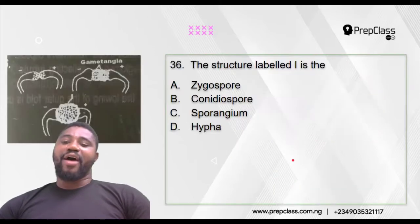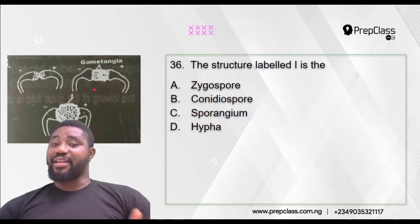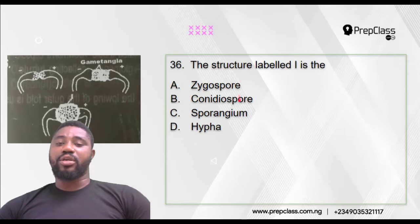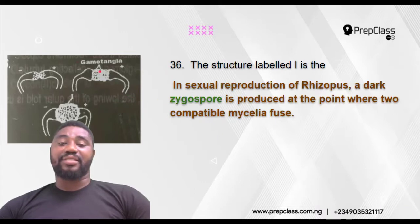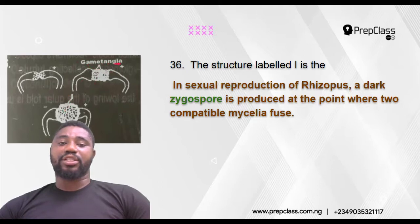Now, in the previous video we were told to use a diagram to answer questions 35 and 36. We've answered 35, so now this is number 36. The structure at part level I — is it a zygospore, a conidiospore, a sporangium, or a hypha? We learned in our previous class that this diagram indicates sexual reproduction in Rhizopus. In sexual reproduction in Rhizopus, a dark zygospore is produced at the point where two compatible mycelia fuse. These two mycelia fuse to form a zygospore. So the name of the part at level one is the zygospore. The correct answer is zygospore, option A.